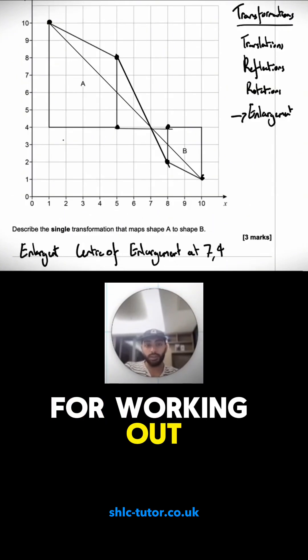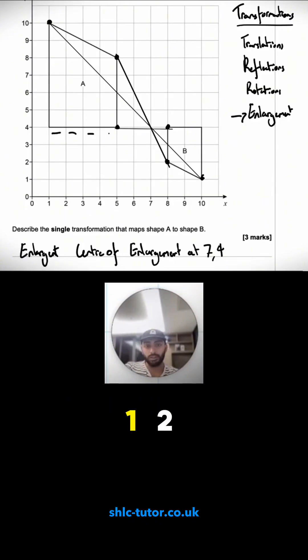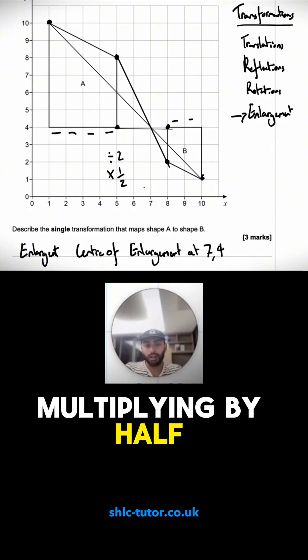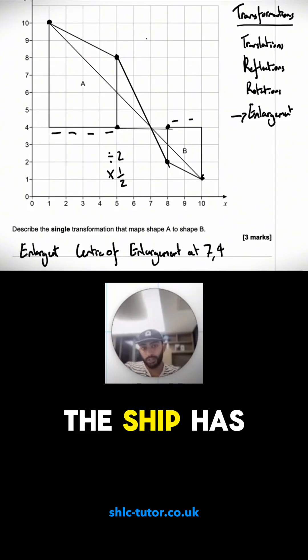I get the last mark for working out the scale factor. So this has a side of 1-2-3-4 and the same side has 1-2. So I've divided by 2 or I could think of it as multiplying by a half. But this time because the shape has been rotated as well it's going to be negative a half.